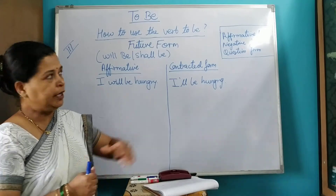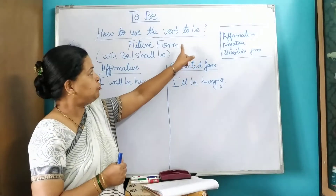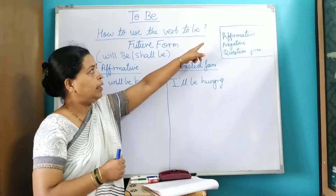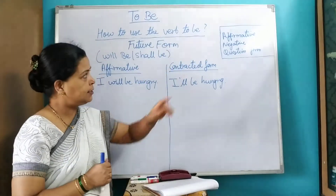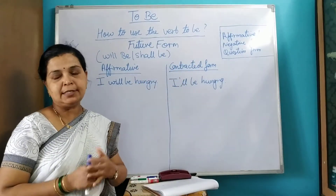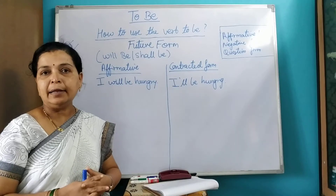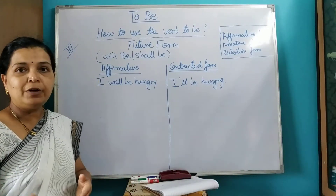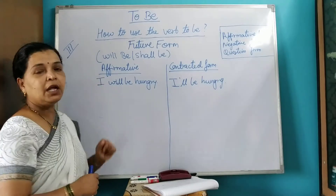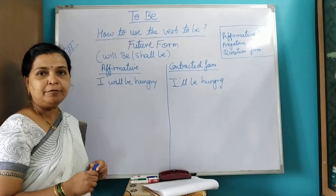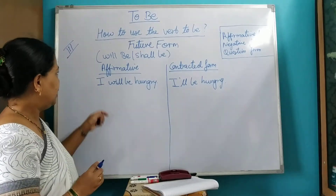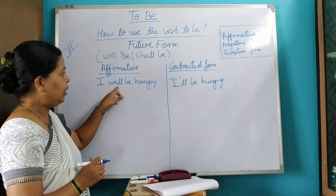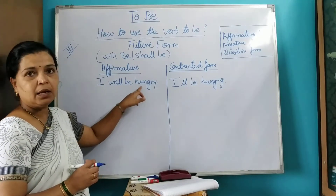We are going to see how to use the future form of 'to be' in affirmative sentences, in negative sentences, and in questions — how to make questions. First, let's see the affirmative or positive sentences. For example: 'I will be hungry.'